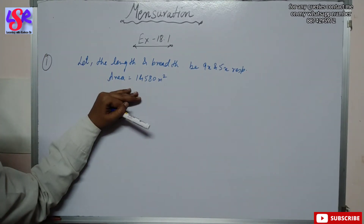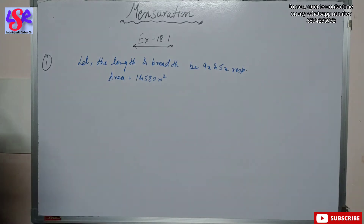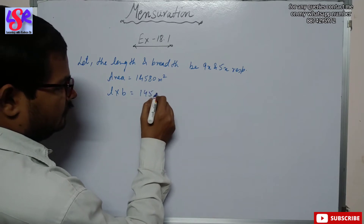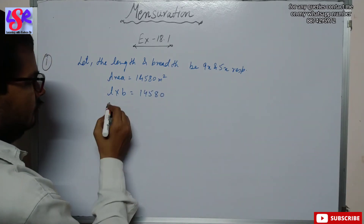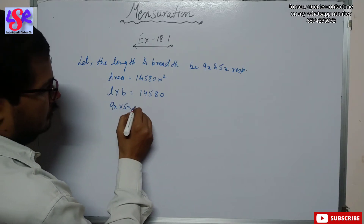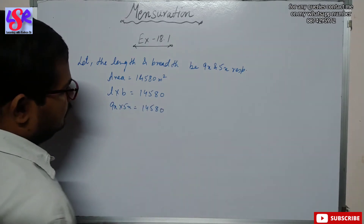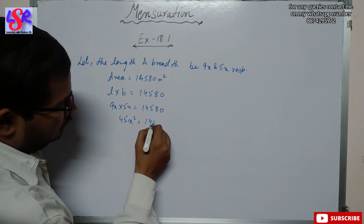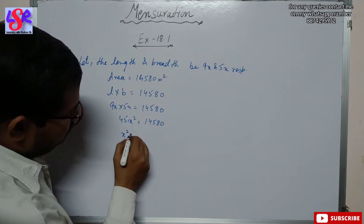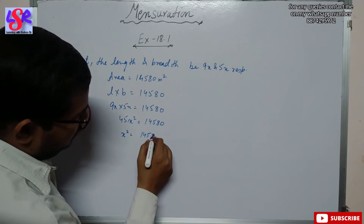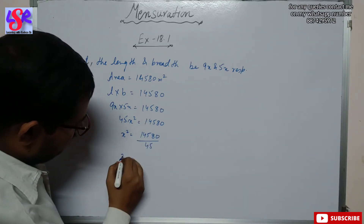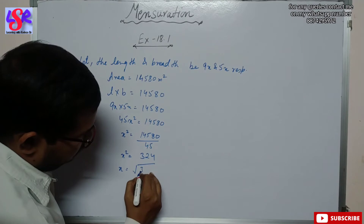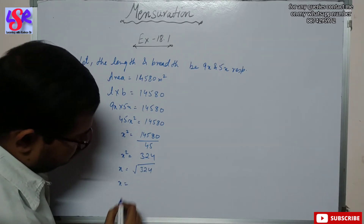We are given the area of the rectangle as 14,580. Therefore, length into breadth equals 14,580, so 9x into 5x equals 14,580, giving 45x squared equals 14,580. Therefore x squared equals 14,580 divided by 45, that is x squared equals 324, and x equals the square root of 324, which is 18.